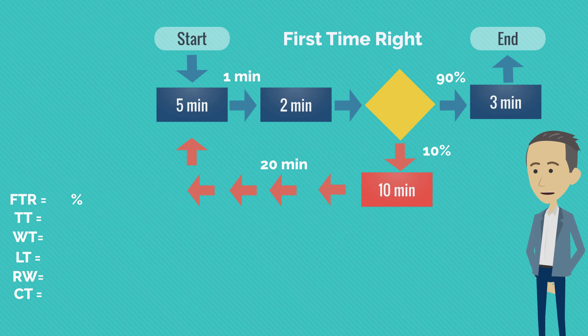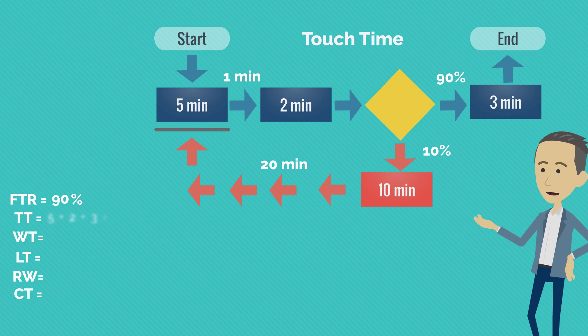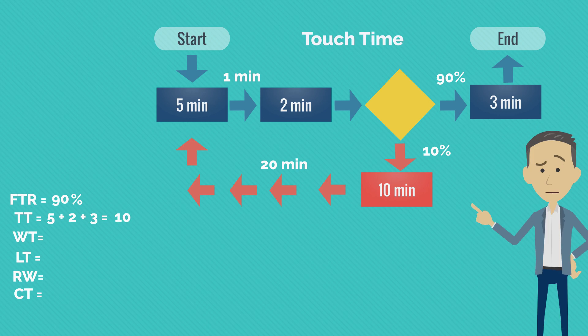Touch time represents the total time employees spend working on a unit that follows the first time right situation. To calculate touch time we would need to sum up 5 minutes with 2 minutes and 3 minutes, and the result is obviously 10 minutes. And pay attention,